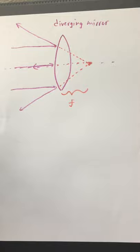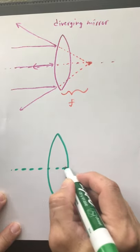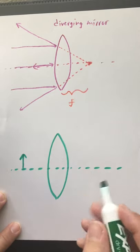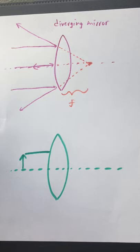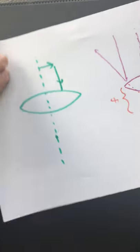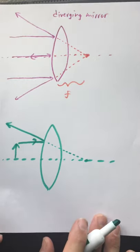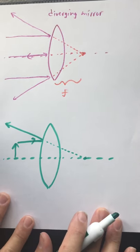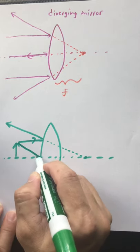So let's see what's going to happen. I'm going to put an object here. The focal point is back here. For ray tracing with diverging mirrors, a ray coming in parallel will reflect as if it were emanating from the focal point. A ray coming in towards the center will reflect at the same angle.